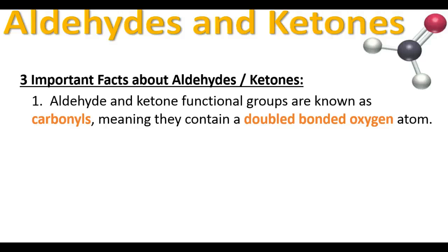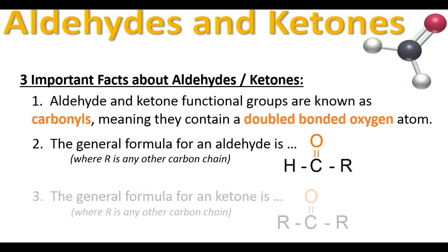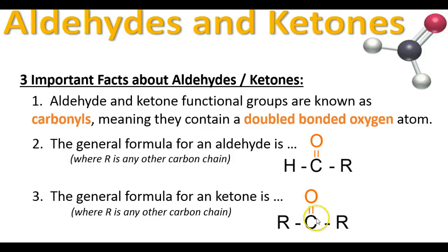Both of these functional groups are together in one video because they're both part of a larger group called carbonyls, which means they both contain a double bonded oxygen somewhere along the carbon chain. For aldehydes, notice the double bonded oxygen — that's what makes it a carbonyl. On one side you have a carbon chain, on the other side just a hydrogen. Ketones are very similar, but there are carbons on both sides of the double bonded oxygen. Aldehydes have the double bonded oxygen at the end of a chain, while ketones have it in the middle.